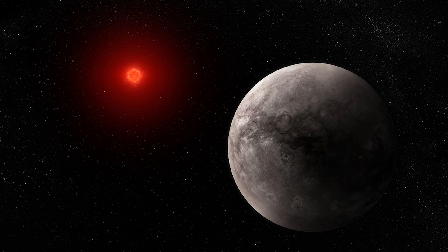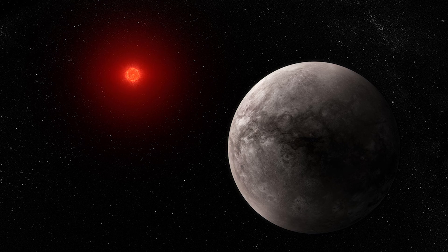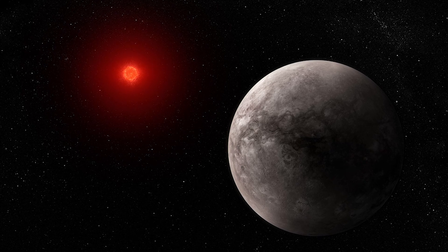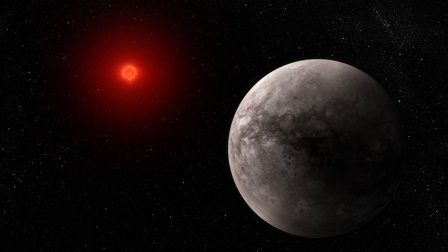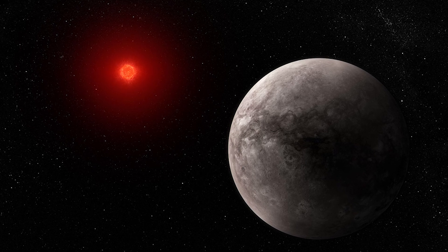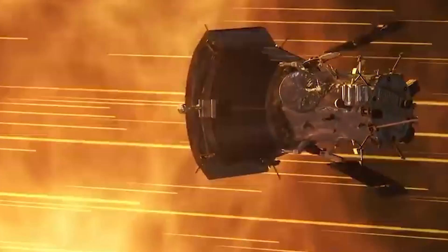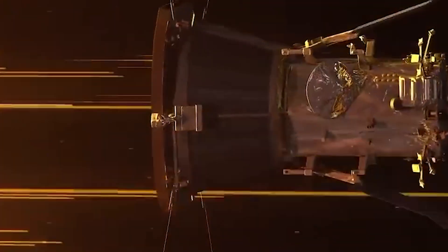The TRAPPIST-1 system is one of our best chances to find extraterrestrial life because three of the seven planets are located in the star's habitable zone. TRAPPIST-1b, Webb's innermost planet, has yet to receive a thorough examination and the results are not encouraging.